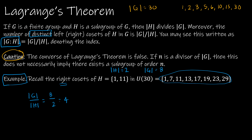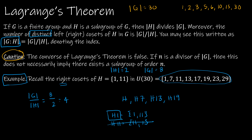Recall from our last video, those four distinct cosets were H, H·7, H·13, and H·19. Keep in mind that H·1 gives {1, 11} and H·11 also gives {11, 1} — those are not distinct cosets. So there are indeed four distinct cosets, as Lagrange's theorem predicted.